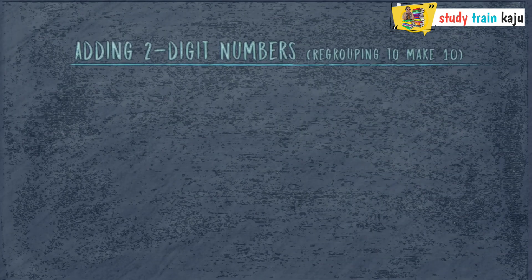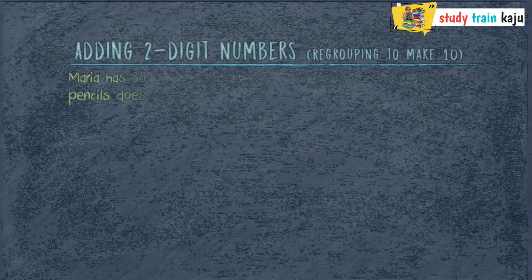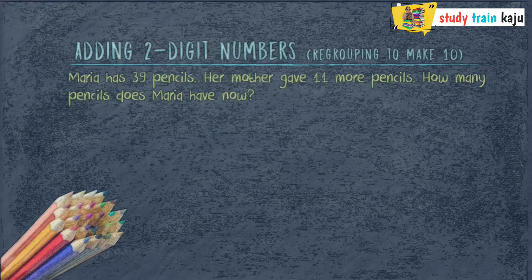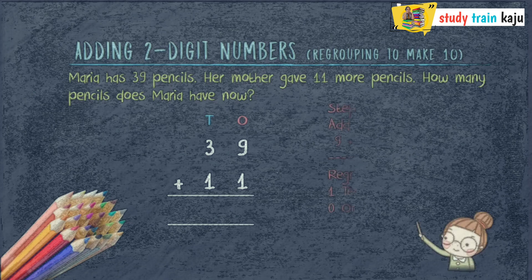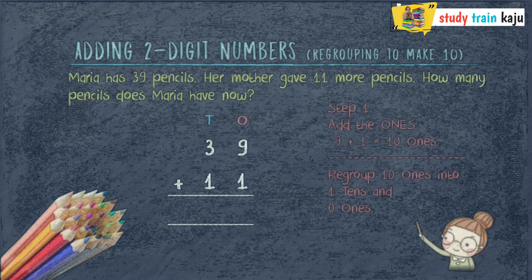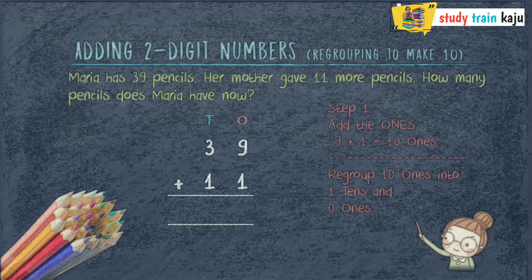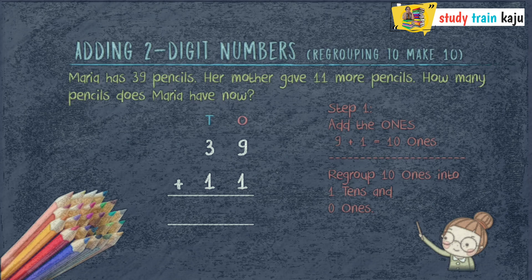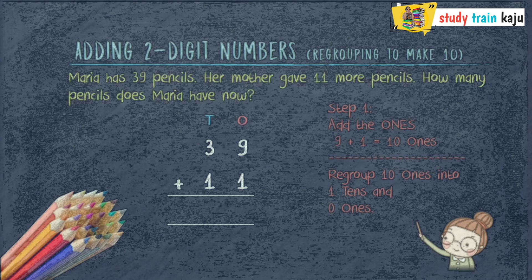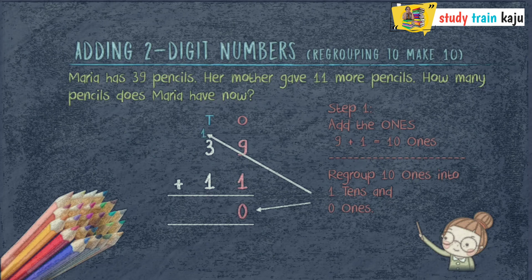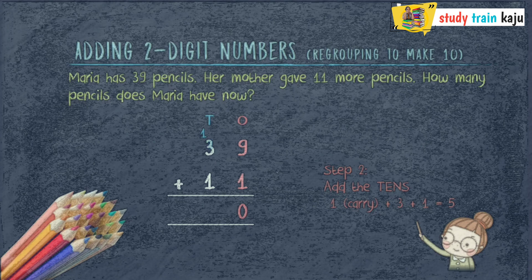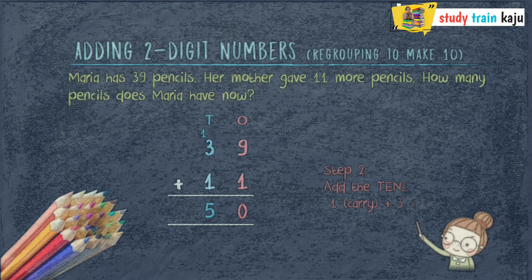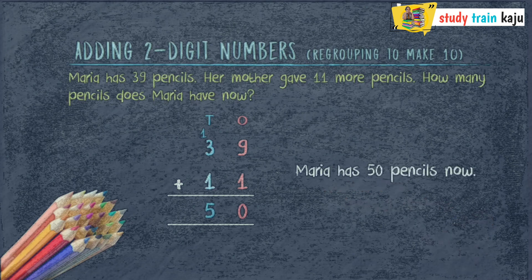Let's understand adding 2-digit numbers with regrouping to make 10. Maria has 39 pencils. Her mother gave her 11 more pencils. How many pencils does Maria have now? Let's add 39 and 11. Step 1: add the digits at the 1's place — 9 plus 1 equals 10. Since 10 is a 2-digit number, we regroup 10 into 1 ten and 0 ones. So 0 comes in the answer and 1 gets carried over to the 10's place. Step 2: add the digits at the 10's place — 1 carry plus 3 plus 1 equals 5. Therefore, Maria has 50 pencils now.